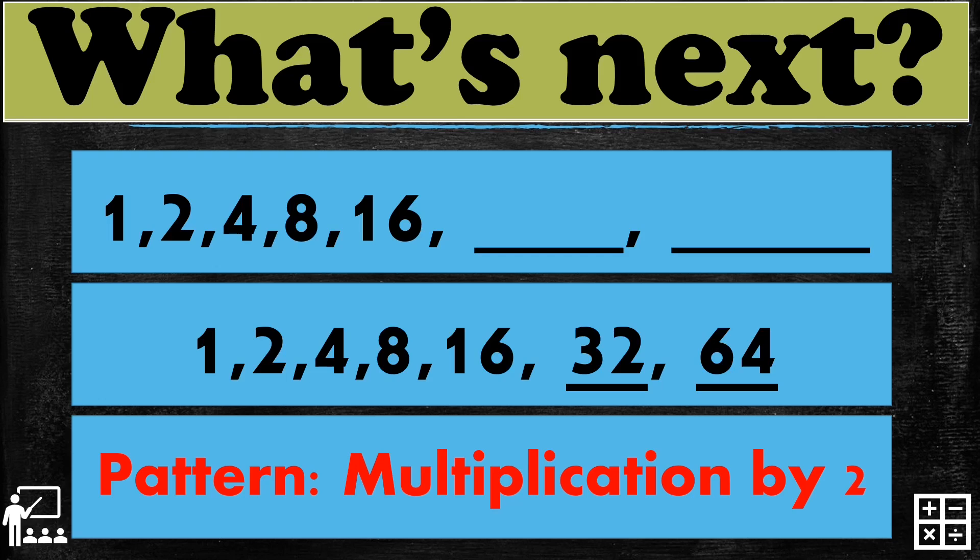So if you multiply 16 by 2, it will give you 32, and 32 multiplied by 2 will give you 64. So the pattern for this sequence is multiplication by 2.